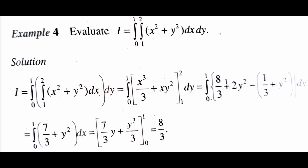Example 4: evaluate I = integral 0 to 1, integral 1 to 2 of (x² + y²) dx dy. Integrating with respect to x: integral 0 to 1 of [x³/3 + xy²] from 1 to 2 dy, which equals integral 0 to 1 of (7/3 + y²) dy. That equals [7y/3 + y³/3] from 0 to 1, giving the final answer of 8/3.